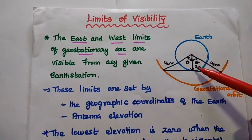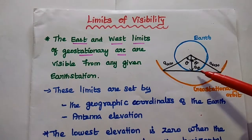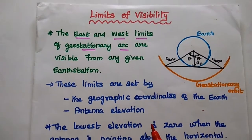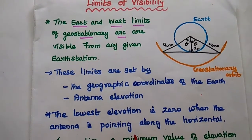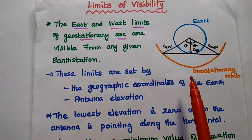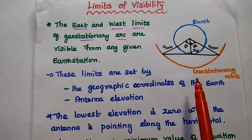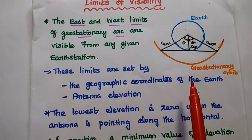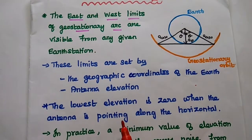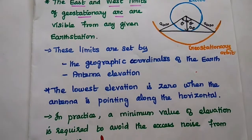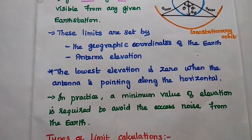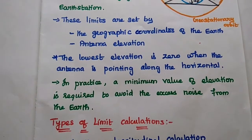In this diagram, AE represents the radius of the earth, and AGSO represents the radius of the geostationary orbit. When the antenna is pointing along the horizontal plane, the elevation angle is 0. However, in order to avoid excessive noise from the earth, this elevation should be a minimum finite value — the lowest elevation is not 0, it should be a minimum finite value to avoid excessive noise.